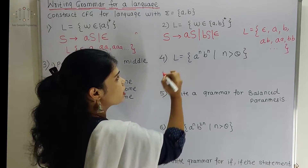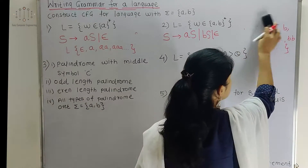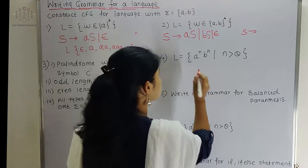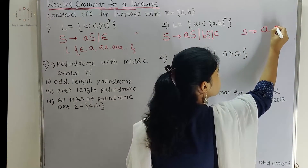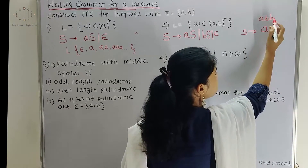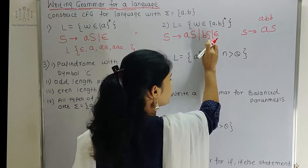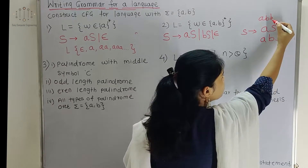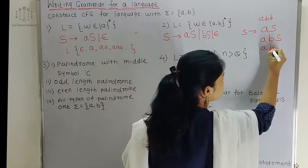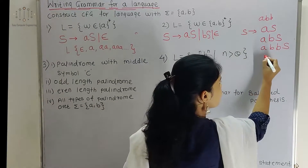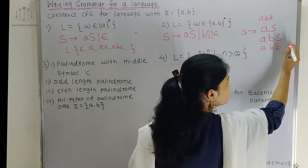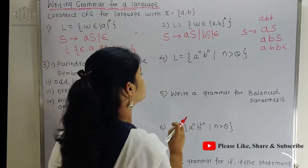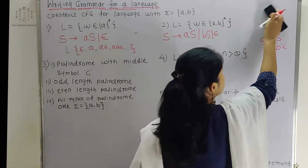Suppose I want to produce the string A B B. So S goes to A S, then after this A I want B, so we put S as B S. Here we put B S, so I got this B character. Again I want B, so for this B we will put A B B S. Now I got A B B, so here we will put epsilon for S. So I am getting A B B as a string with the help of this grammar. This is the grammar for the second example.